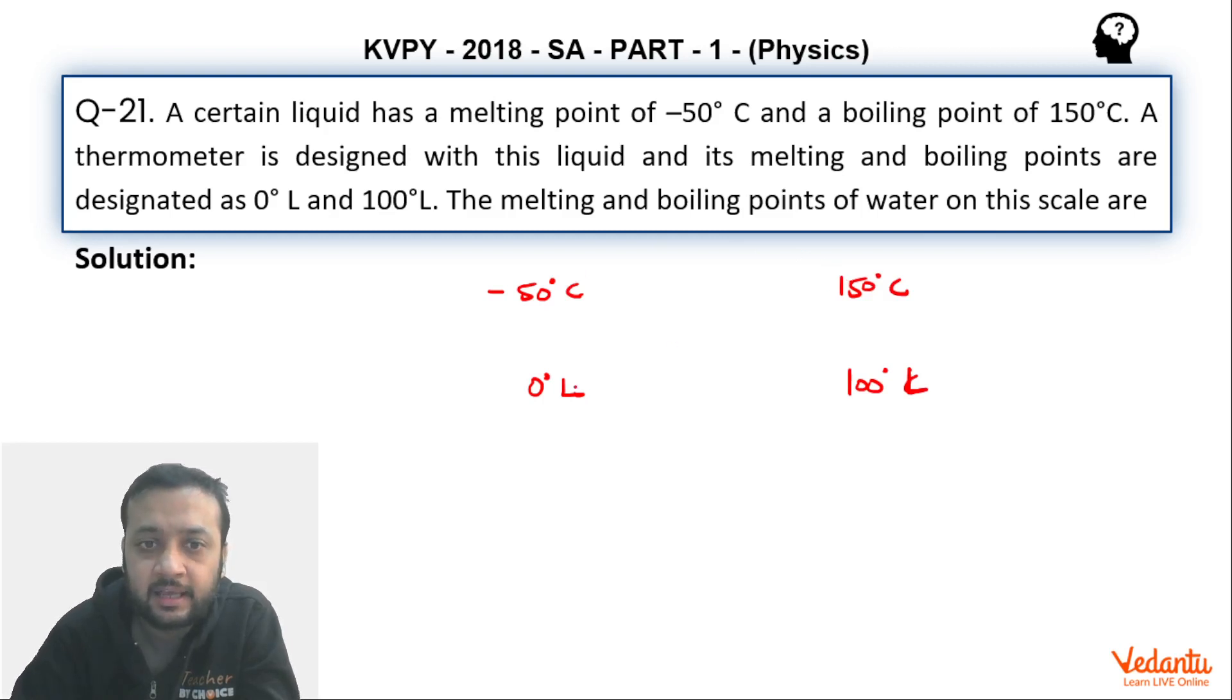This is what is given over here. Using this data we have to find the melting and boiling point of water. Fairly simple question. We know that melting point of water is 0 degree Celsius. For every one degree rise in Celsius we have 0.5 degree rise in L.